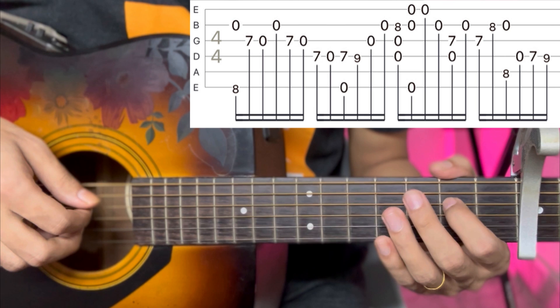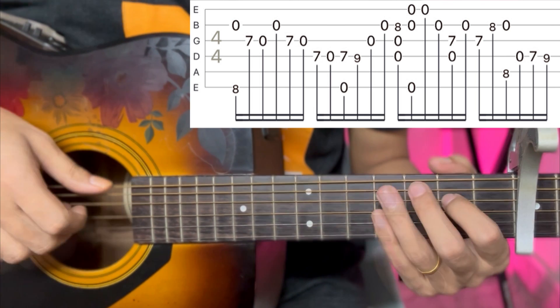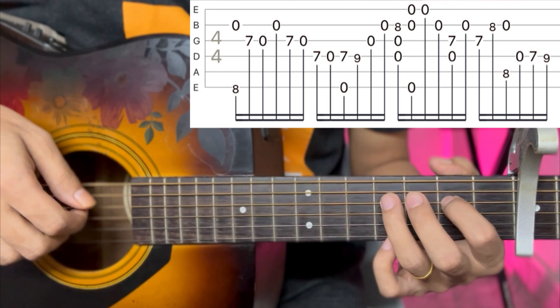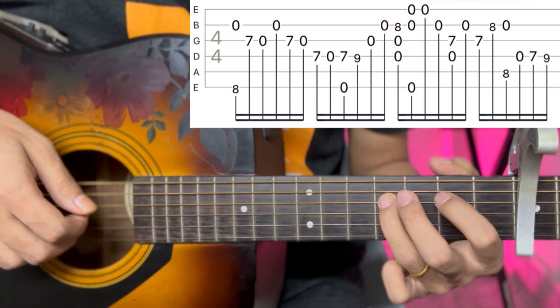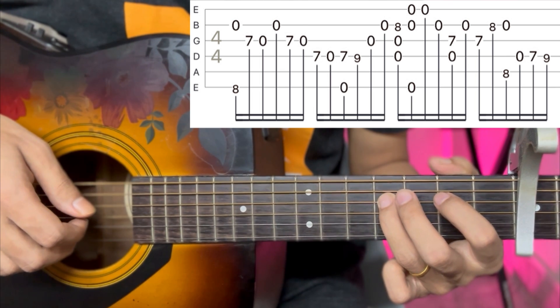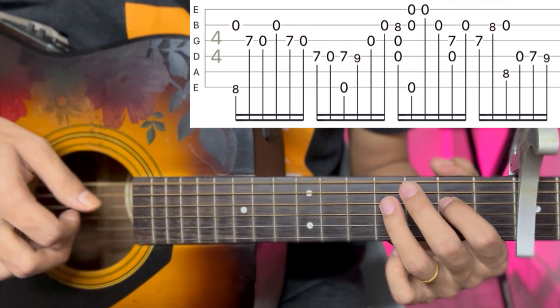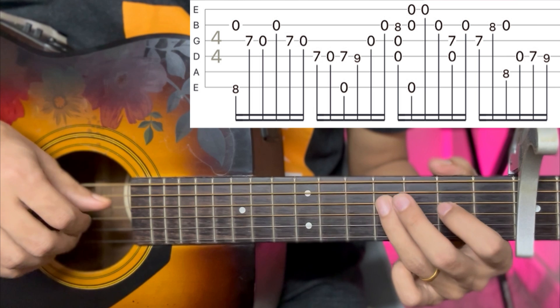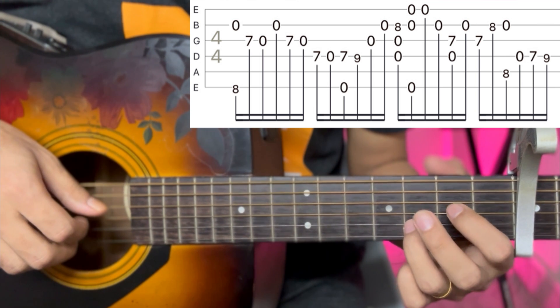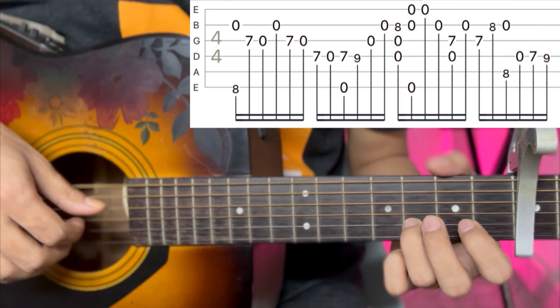Fourth string seventh fret, sixth string and fourth string ninth fret. We will play open, second string open, second string open. Now fourth, third open and second string eighth fret, fourth, third, second, seventh.